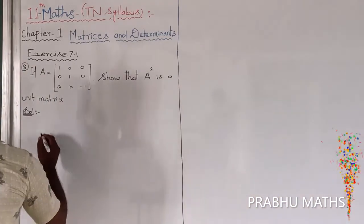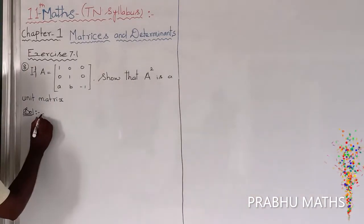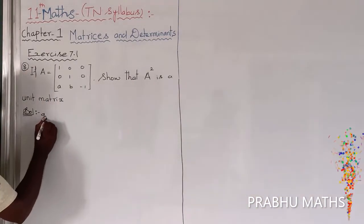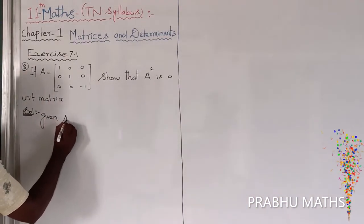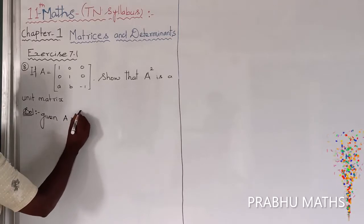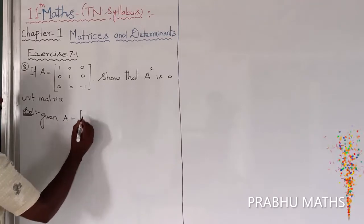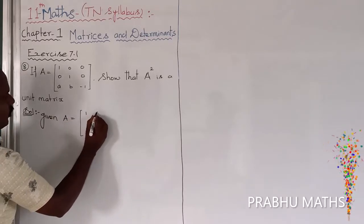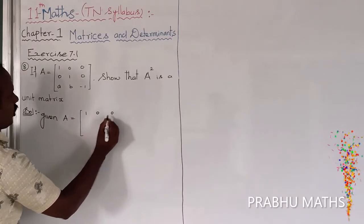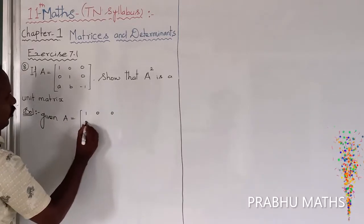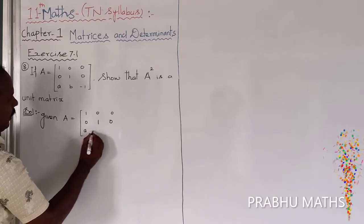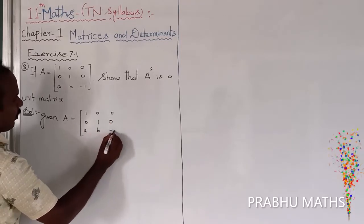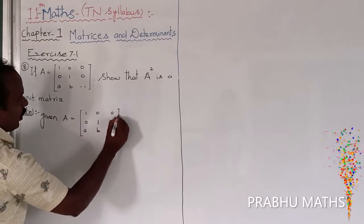First of all, the given matrix A is equal to: 1, 0, 0; 0, 1, 0; A, B, minus 1.